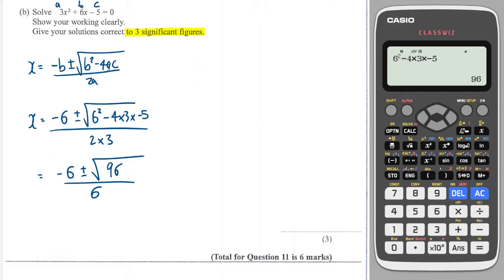And now I'm good to go just to type that into my calculator, so I'm going to write minus 6 plus the square root of 96 over 6. And that gives me x equals 0.63.